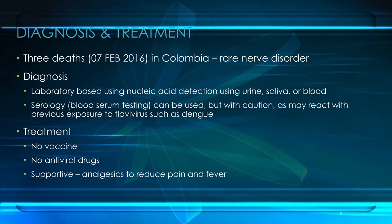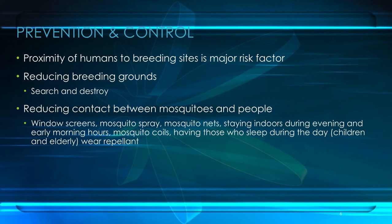In terms of treatment, there are no commercial vaccines and no specific antiviral drug treatments for Zika virus infection. Treatment is directed primarily at relieving symptoms using analgesic drugs and antipyretics — drugs used to reduce fevers. So from a public health standpoint, we're going to be very concerned with prevention and control if Zika virus comes to our country.